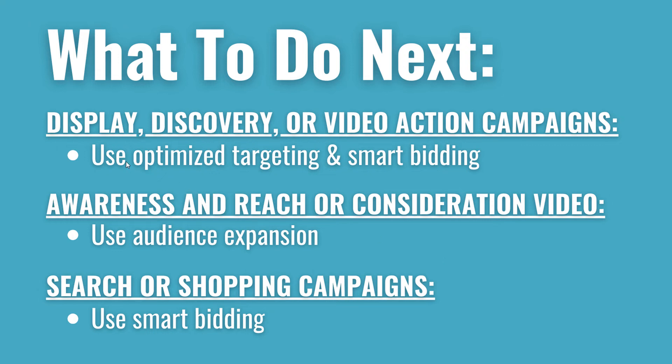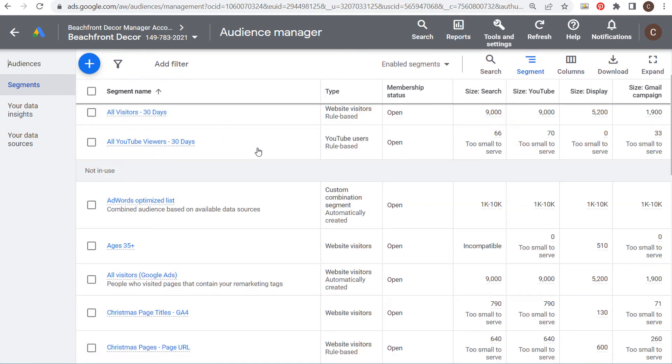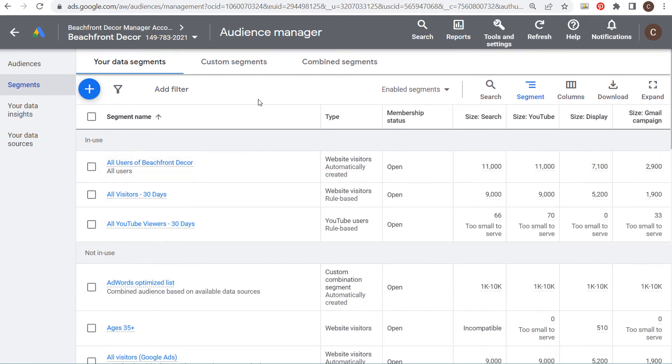What it sounds like is that Google Ads is using optimized targeting to create similar segments based on all the information they have about your business — your assets, your landing pages, your ads, and the different data segments you're creating.